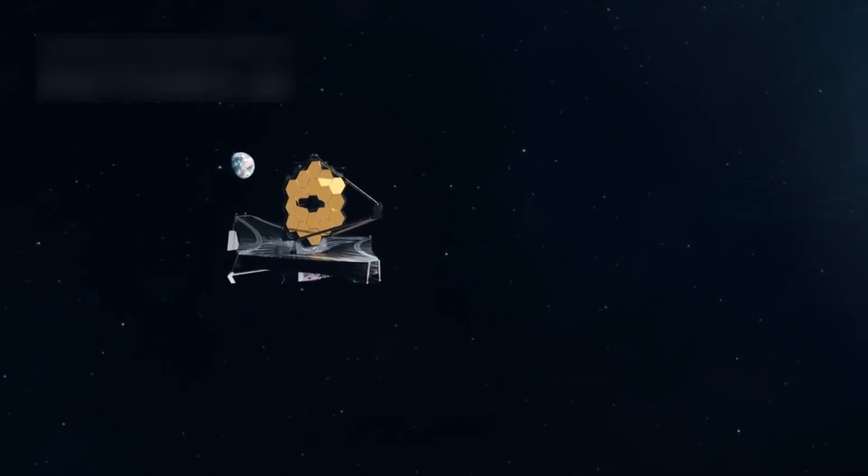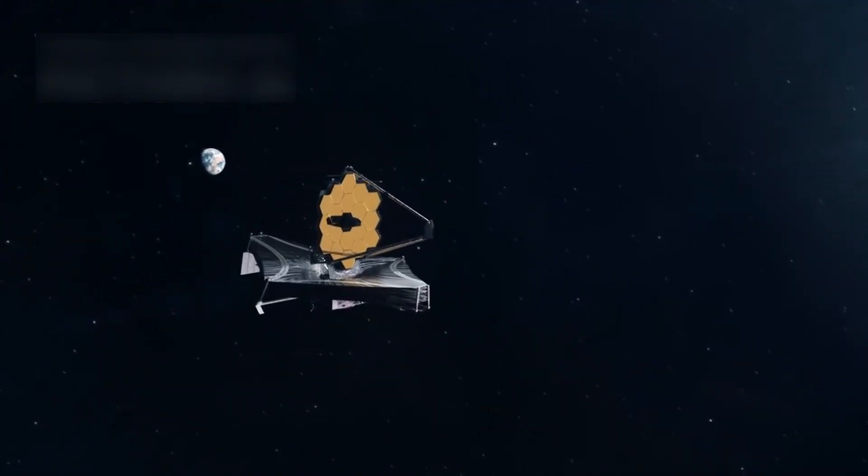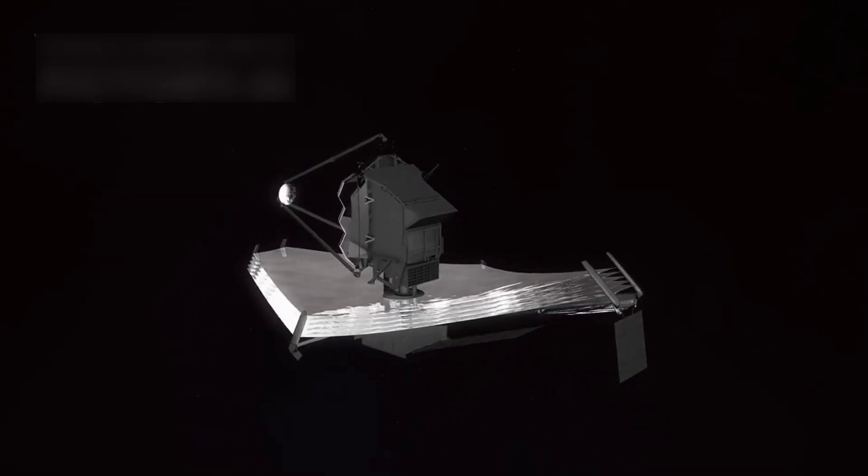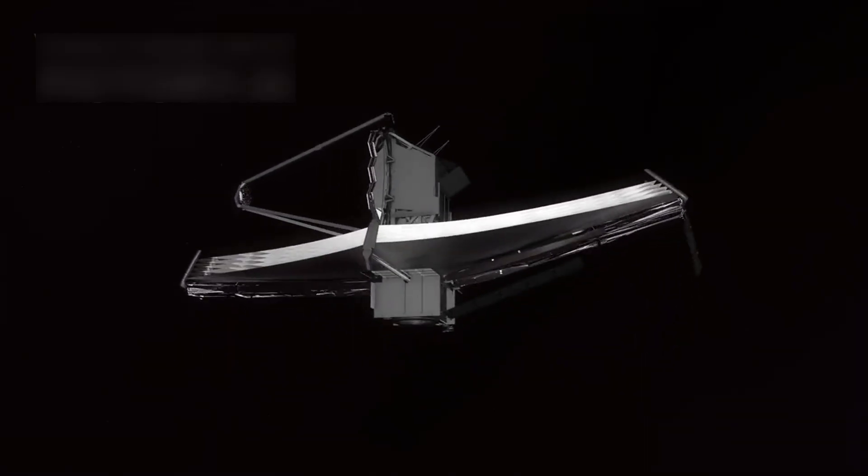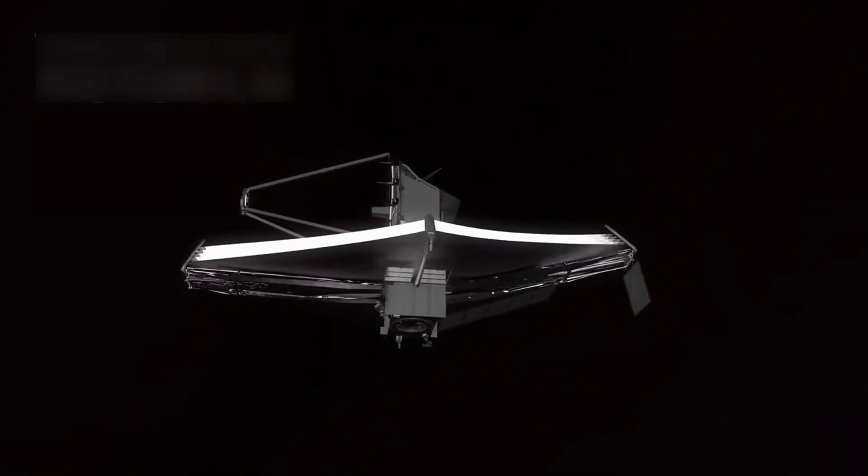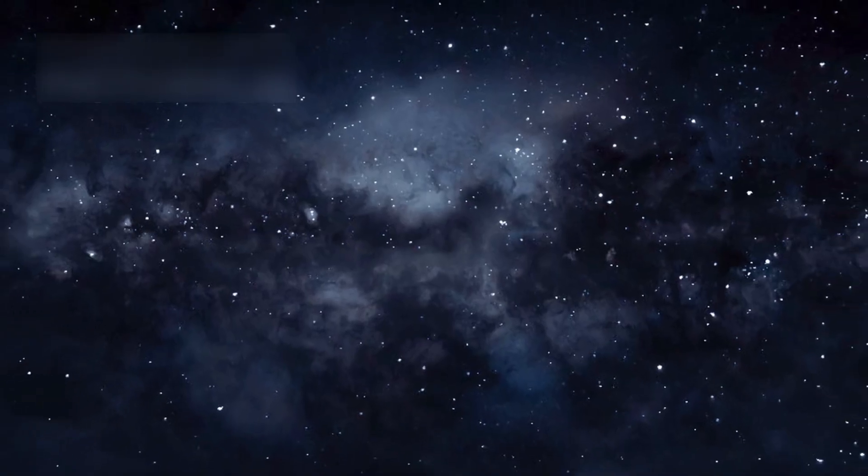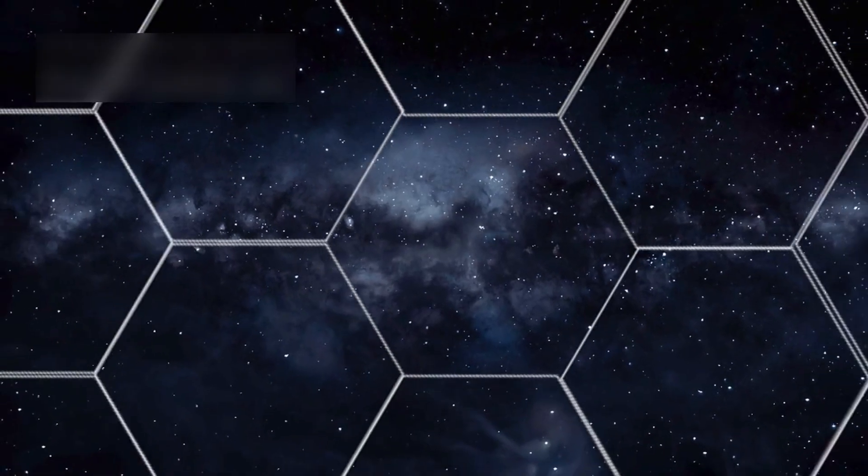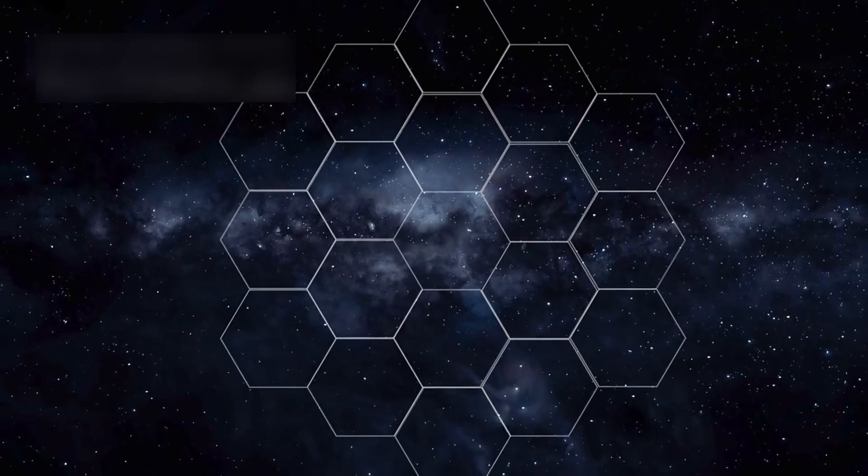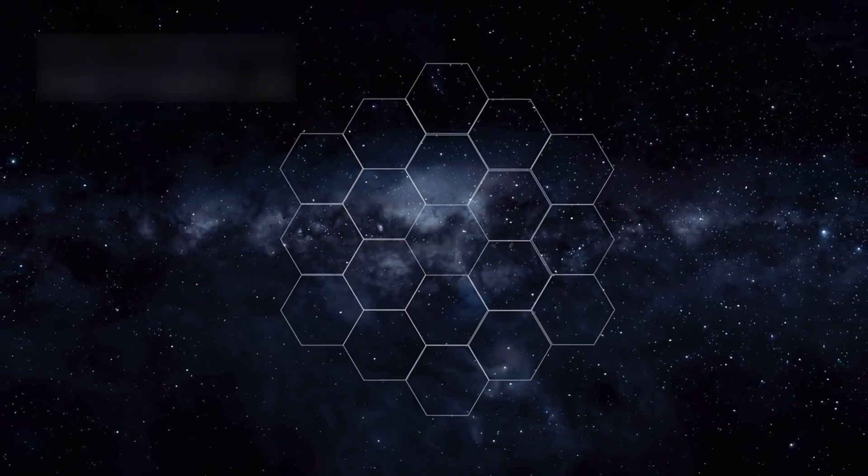The telescope is a massive engineering feat, built by NASA with help from Europe and Canada. It cost $10 billion and took 20 years to design before flying into the sky. The mirror of JWST is 21 feet wide, made of gold-coated pieces that fold out like origami in space.